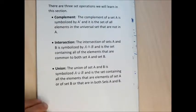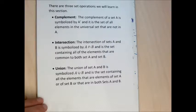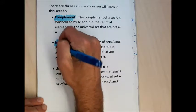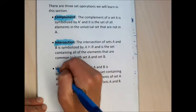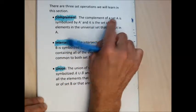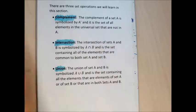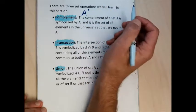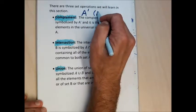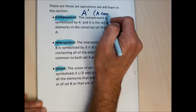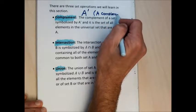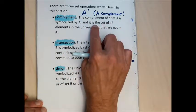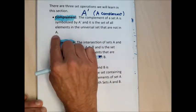There are three operations we're going to learn in this section: complements of sets, intersections of sets, and unions of sets. The complement of a set A is given the symbol A-complement. If I see this symbol, I would read it as 'A complement' or 'the complement of set A.'